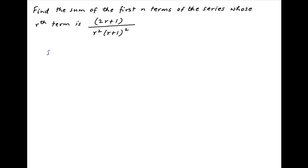Let's denote the sum of the first n terms of the series by Sn, which is equal to the summation of (2r + 1) divided by r² times (r + 1)², where r varies from 1 to n.